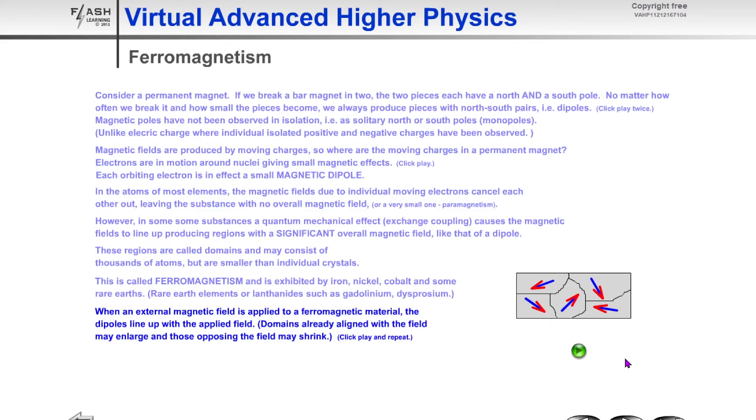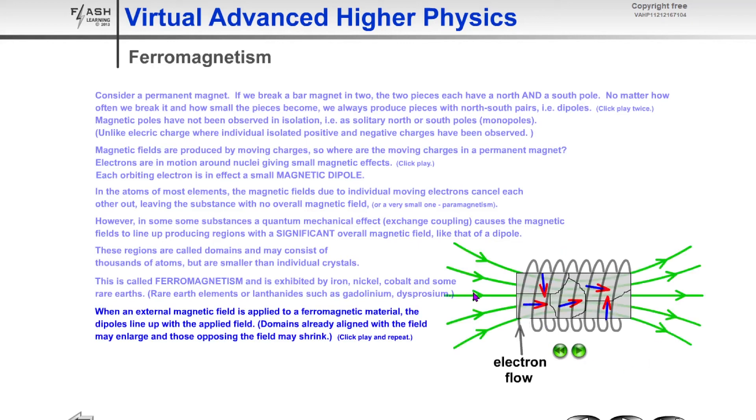However if we apply an external magnetic field to this ferromagnetic material such as by wrapping a coil of wire around it then you'll see we get the electric field lines passing from left to right like a solenoid and you can see there that the dipoles have all aligned with the direction of the external magnetic field. And we could say at this point that the material has become magnetised.